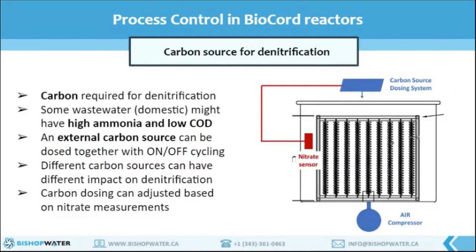Another aspect that influences total nitrogen removal is the presence of carbon in the system. The carbon-to-nitrogen ratio represents one limiting factor for the metabolism of the denitrifying bacteria, which need an organic carbon source when reducing nitrates to nitrogen gas. This is a typical problem in domestic wastewater where high ammonia is present along with very low carbon concentrations. When ammonia is converted to nitrate and no carbon is available in the wastewater, the anoxic phase alone will not properly function. In this case we would need to dose an external amount of carbonaceous substance, for example methanol or ethanol. To better control the carbon dosing, we can also use a nitrate sensor to dose the required amount of carbon to maintain the carbon-to-nitrogen ratio.